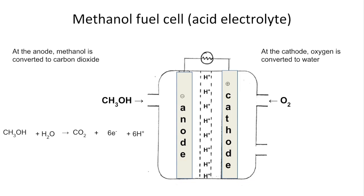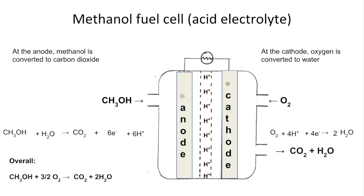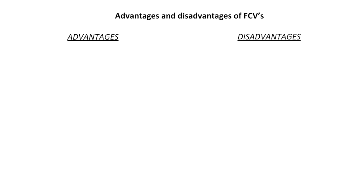For the cathode, oxygen is converted to water: O₂ goes to H₂O. Putting a 2 in front of the water deals with the oxygen, and we need 4 H⁺ ions. Charge-wise, we need 4 electrons to bring the overall charge on the left down to 0. For the overall equation, the anode equation is multiplied by 3/2 to get the electrons up to 6, and those cancel to give the final overall equation.